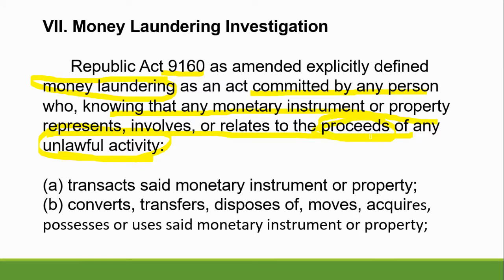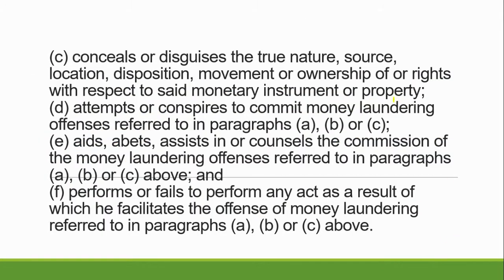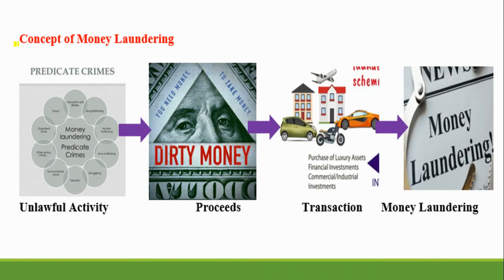The dirty money, which is the proceeds of unlawful activity, you transact it — transact the monetary instrument: buying properties, deposit, manage, transfer, buying insurance, buying gold, convert, transfer, disposal, moves, acquires, possess, use — or you conceal or disguise the true nature or source or location. Attempts to conspire to commit any money laundering act as defined in paragraphs A, B, C. That is the concept of money laundering — there are what they call predicate crimes.